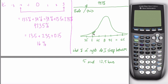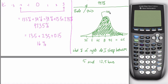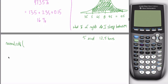We can still draw the same picture — start at five, go out to twelve and a half, and shade that region. Going back to the first videos in this chapter, the area under the curve has two interpretations, one of which is the percentage of all observations that fall within that range. Now instead of using a lot of math with the empirical rule, we can just tell our calculator what area we want. There's a calculator function called the normal CDF function, and you always use it to find the area under a normal curve.